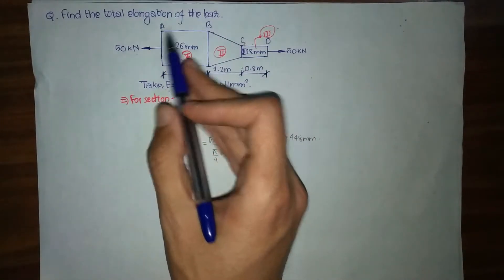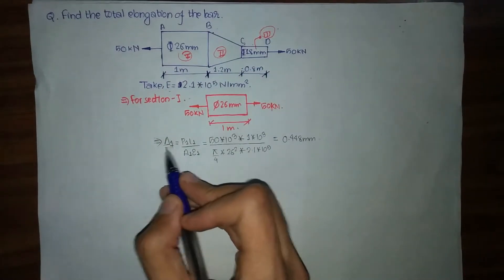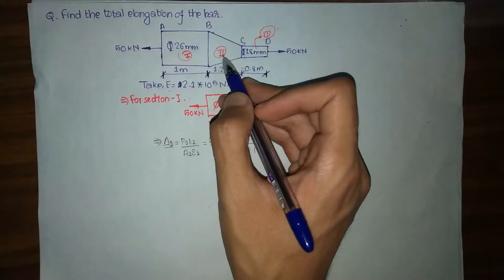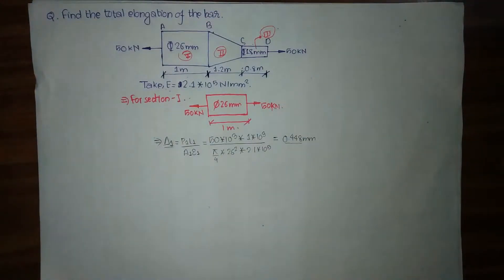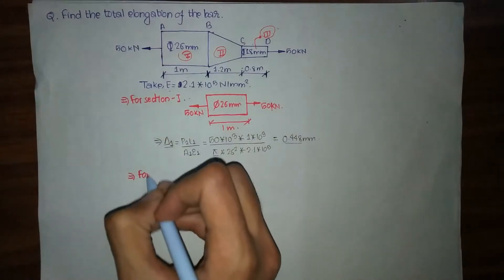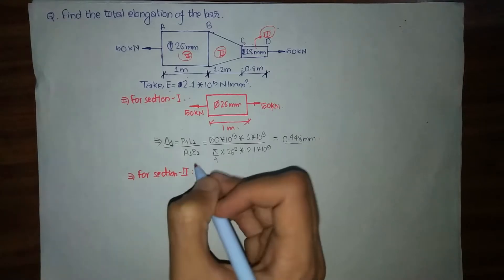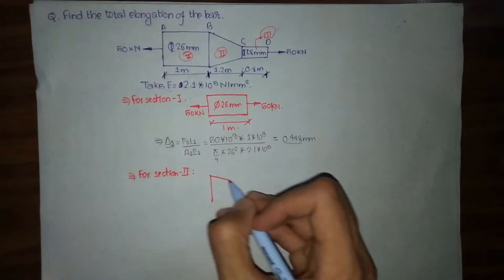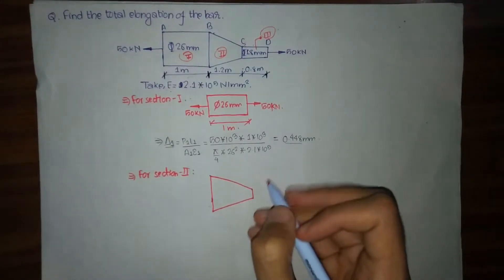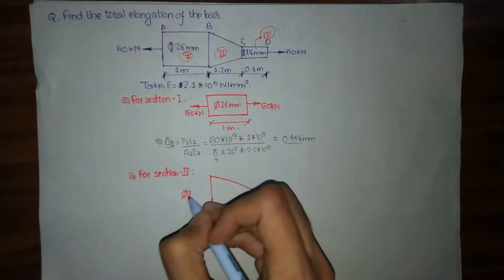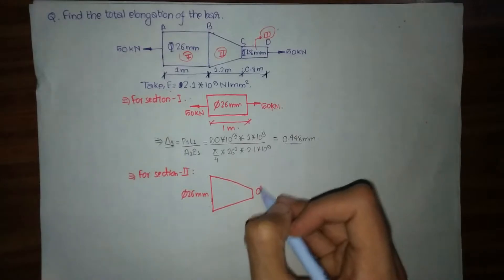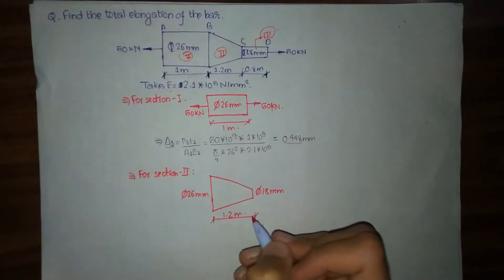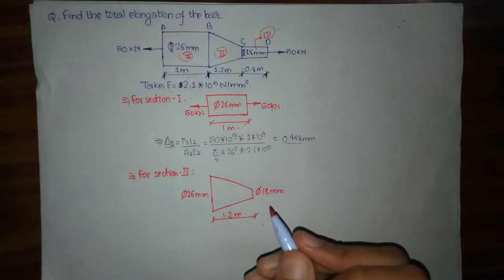Solving this gives δ₁ = 0.448 mm. That is the elongation of section one (portion AB). Now for section two: the diameter is 26 mm at point B, uniformly tapering to 18 mm at point C, with length 1.2 meters.